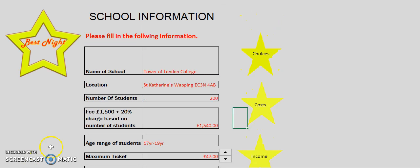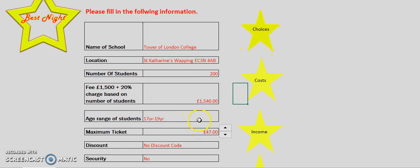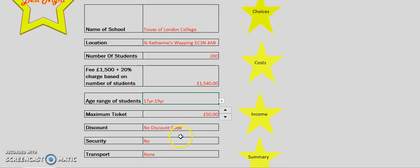Firstly, go to the information sheet, filling in the name of the school, location, and the number of students attending the prom. Select the age range using a drop-down list and then select the maximum ticket price using a spinner. For this example, I am setting the maximum ticket price at £50. Also for this example, I will not be including a discount, security, or transport.